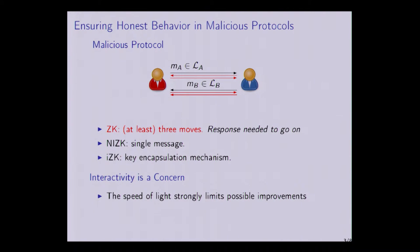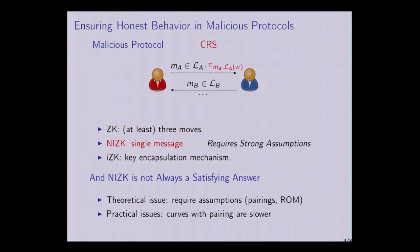This incurs a blow-up in round efficiency by a factor of at least three, and more in general protocols. The good side of zero-knowledge proofs is that they can be based on a wide variety of widely studied assumptions such as DDH or DL. On the other hand, if we are looking for more round efficiency — because interactivity is a major bottleneck for time efficiency — one can settle for non-interactive zero-knowledge proofs.